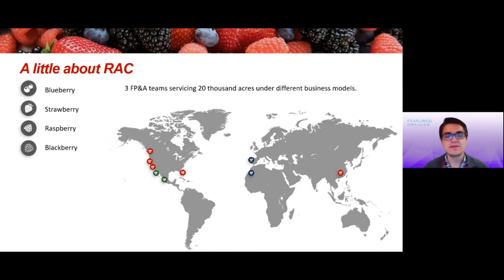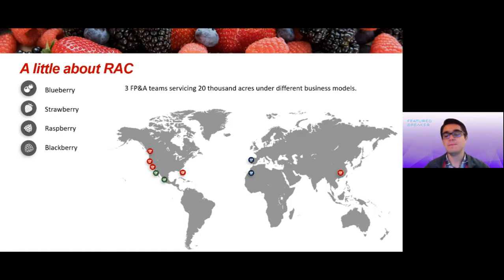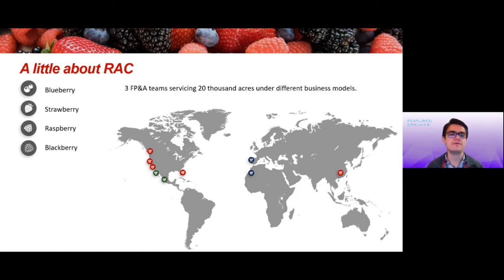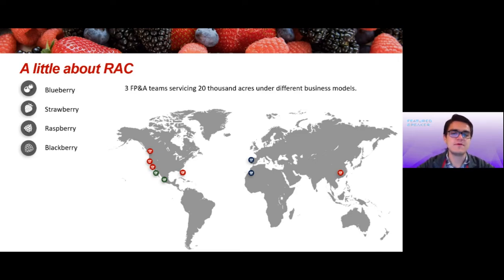We are distributed across different regions in the world — Canada, California, Florida, Mexico, Europe and Africa, and most recently China. Across all these different regions, we have three different FP&A teams that service a total of 20,000 acres with different kinds of business models: wholly owned operations, independent growers, and partners working in these regions.